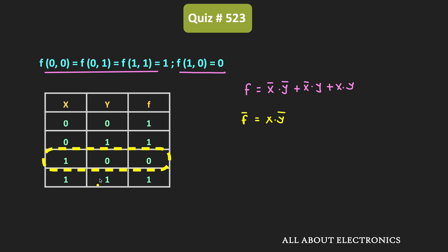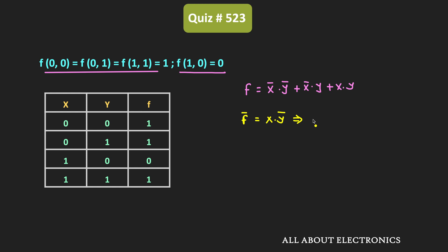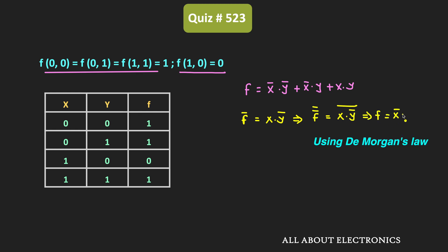Because for this input combination, f is equal to 0. So if we take the complement of it, we can say that f double bar is equal to (xy̅) bar, and that is equal to f. That means f is equal to x̄ + y. So the given function is equal to x̄ + y.